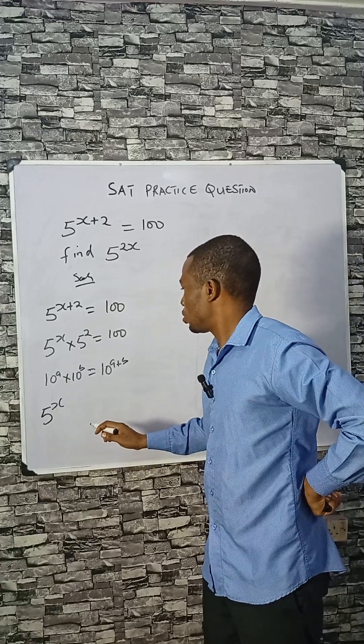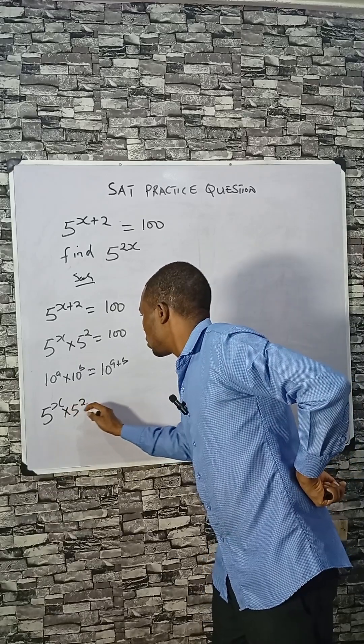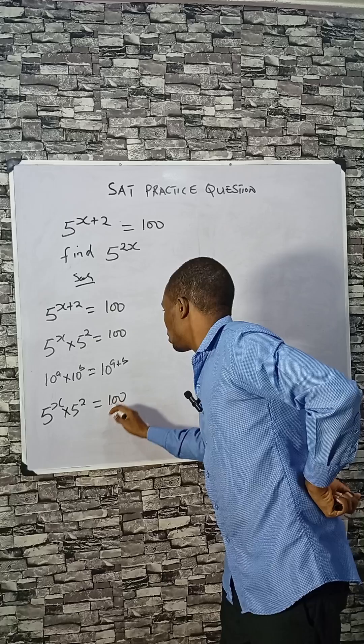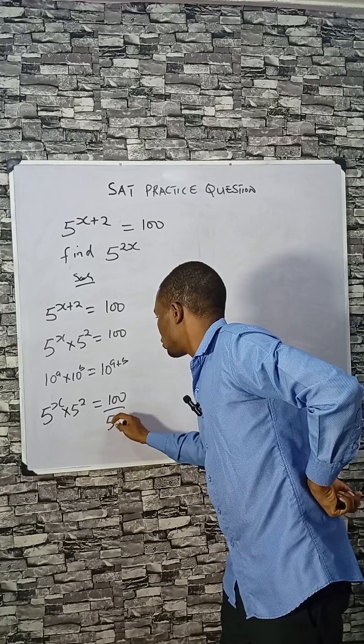Now you need to make sure that 5 raised to the power of x stands alone. So that means we have to divide through by 5 squared.